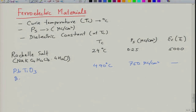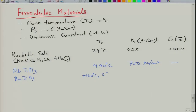Barium titanate (BaTiO₃) has three ferroelectric transitions as you cool the material: the first occurs at 120°C, and the others at 5°C and -90°C, each with a different crystal structure. It has a spontaneous polarization of nearly 26 μC/cm² and its dielectric constant again reaches a few thousand.